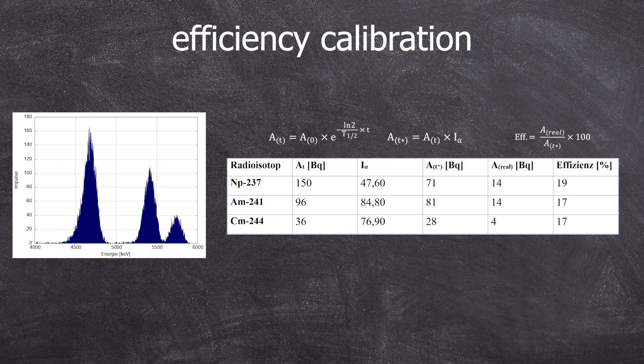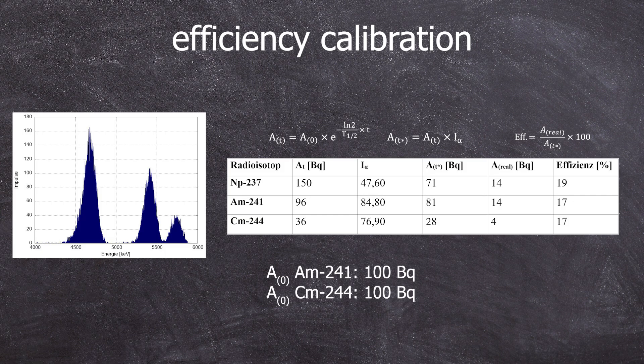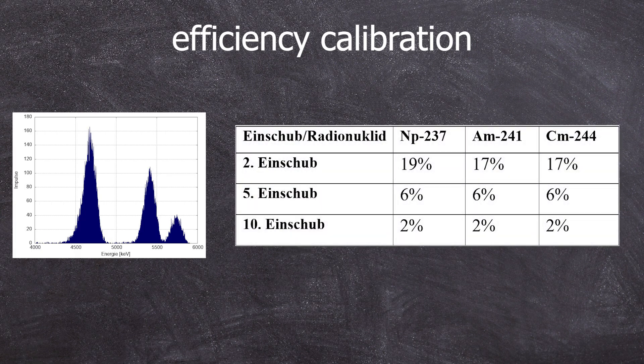After calculating the activity for all three elements and measuring the activity for all three nuclei via the region of interest, and then dividing this by the theoretical activity, the efficiency for the second slot is approximately 17%. Unlike with the Gaily, we don't have an energy-dependent efficiency.